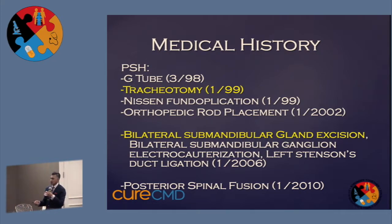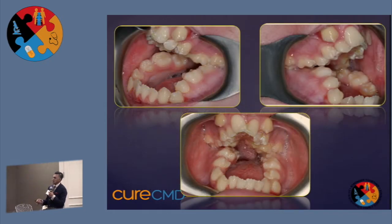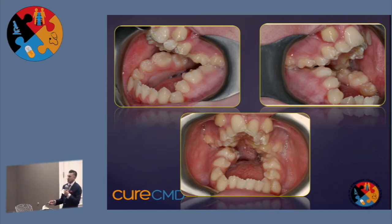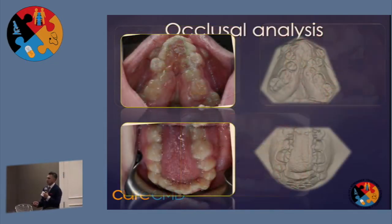There were also some spinal fusions and orthopedic procedures as well. This is a close-up view of the dental problems. This is when she's closed, and she's only touching her back molars — there's a significant open bite in the front, not being able to get her teeth to touch.